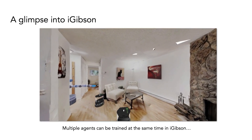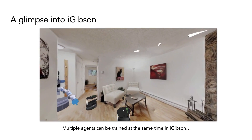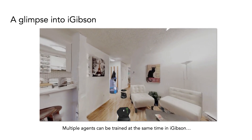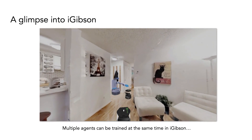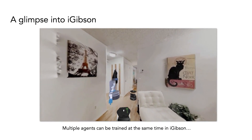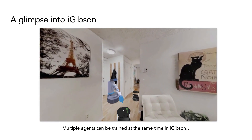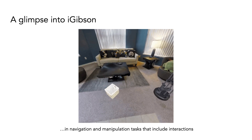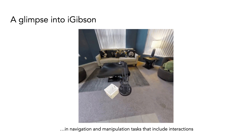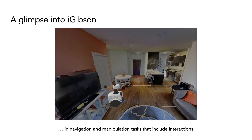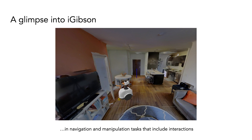Using these virtual sensor signals, we have succeeded in training visually controlled robotic agents in navigation tasks avoiding obstacles, or interactive navigation tasks where the robot can push obstacles away, or even more, manipulating the environment — for example, opening doors using the robot's arms.